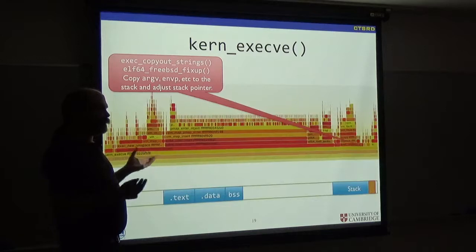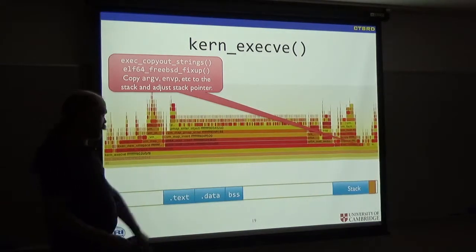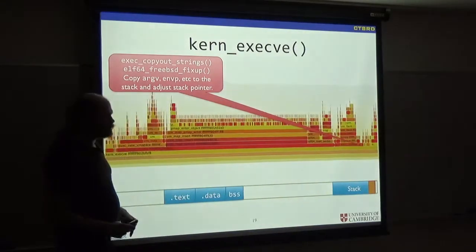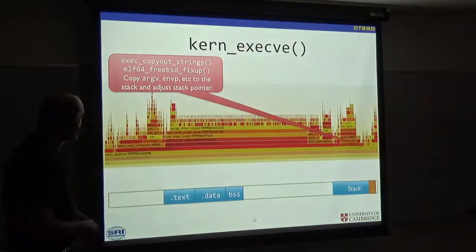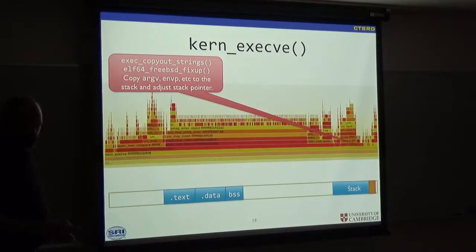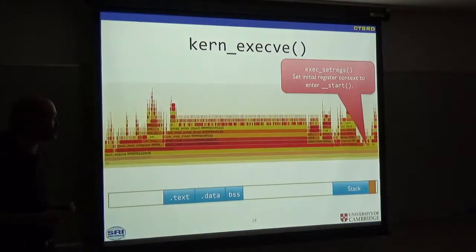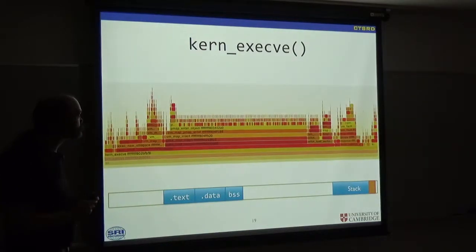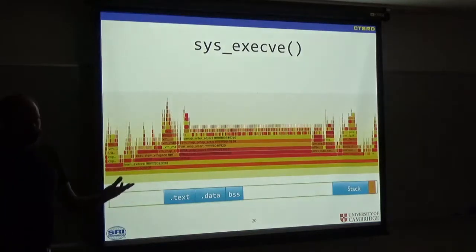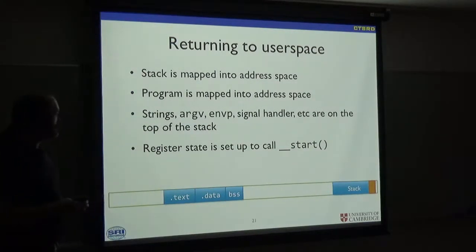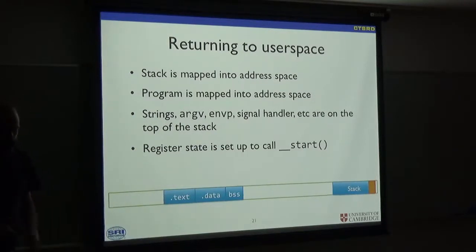Then, we pop back to the execve function. Now, we need to give the program its arguments and its environment. Which means that they have to be in the address space of the new execution. There's this exec_copyout_strings function that copies these strings out. And then, we set up our initial register context to enter the program at the start function.